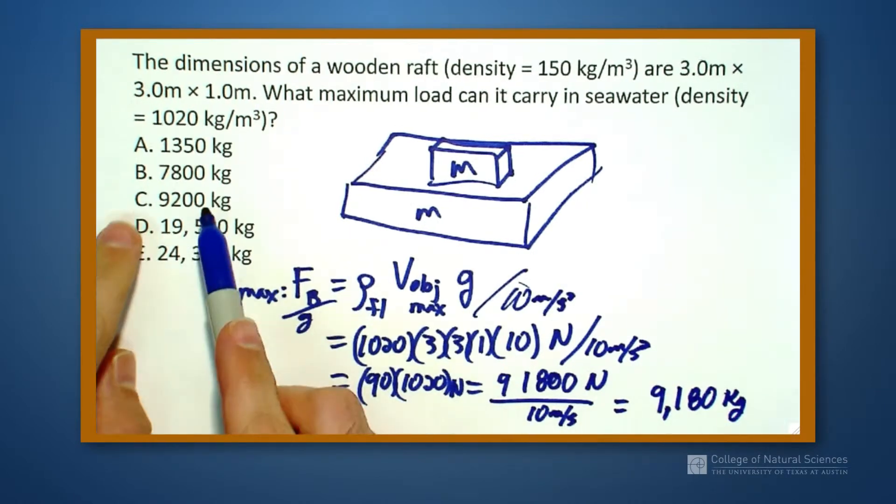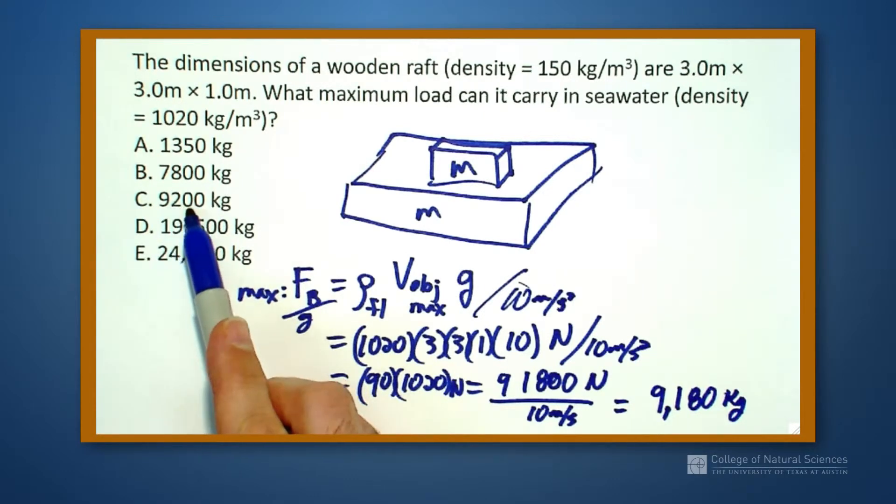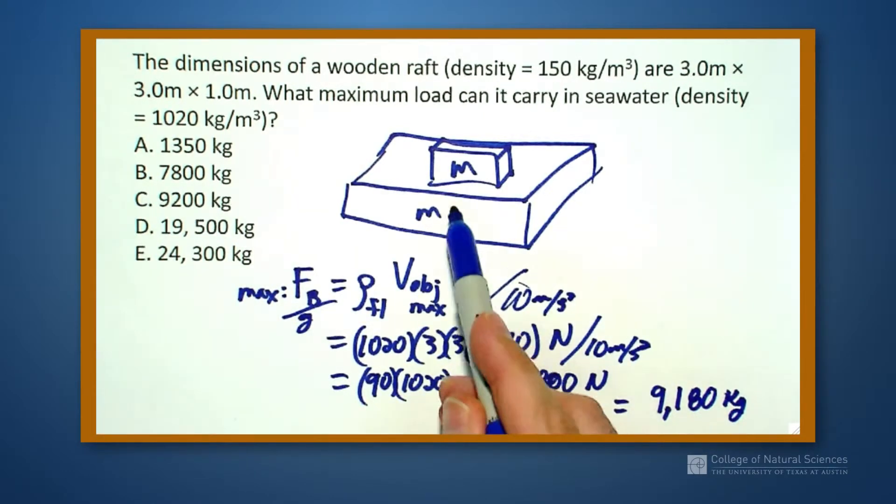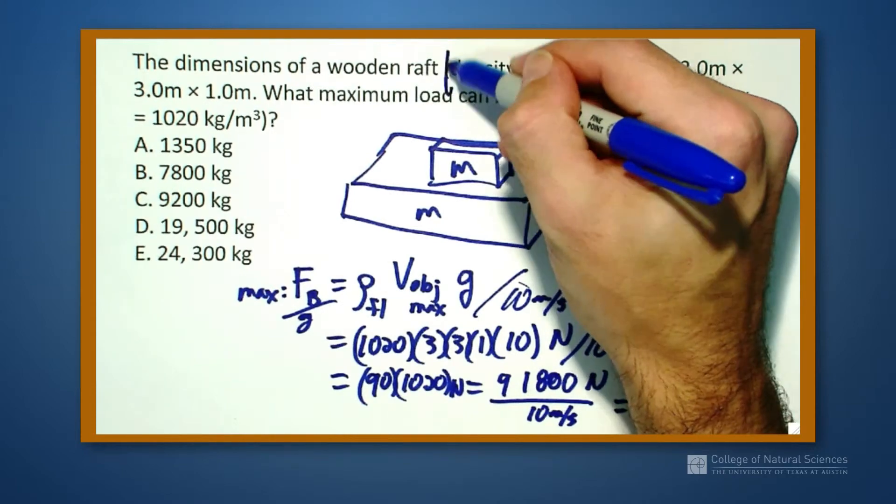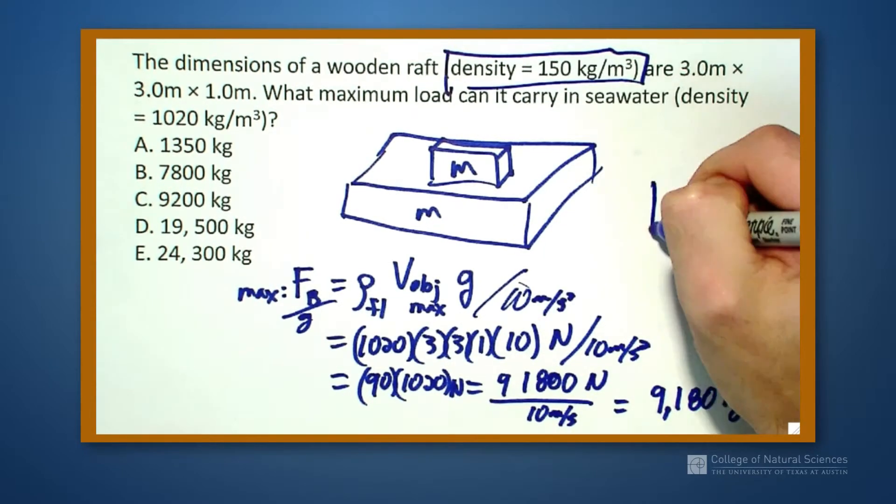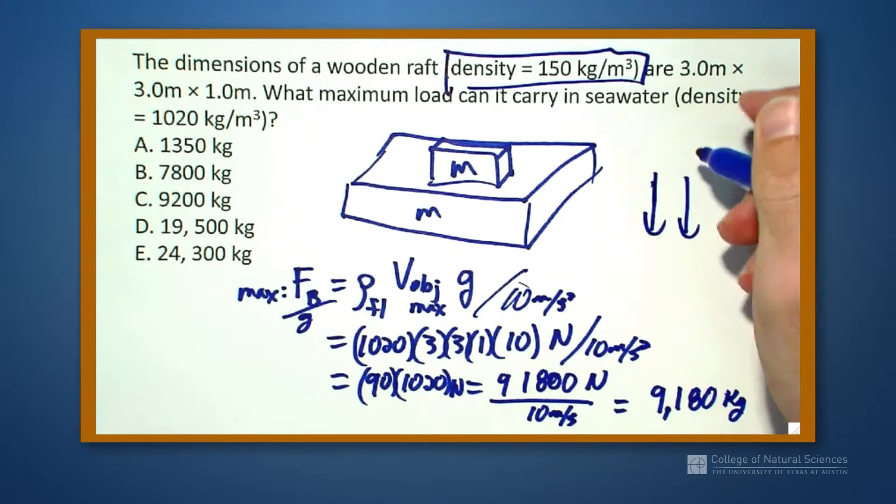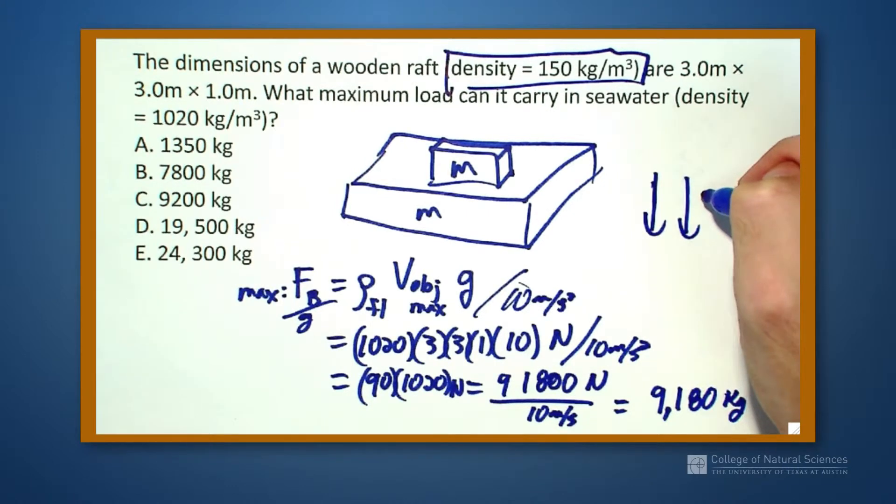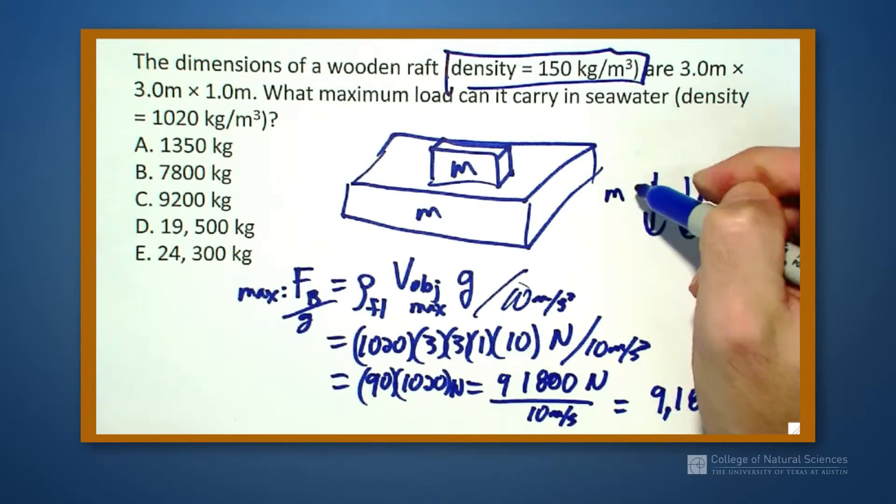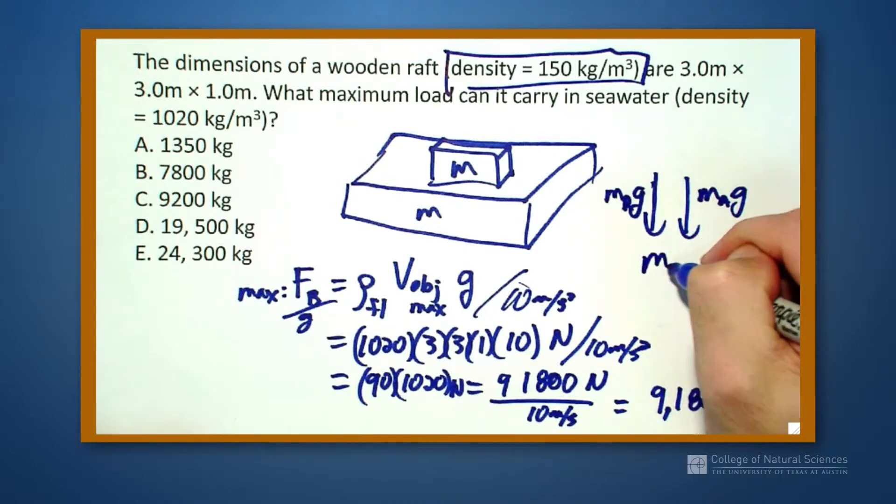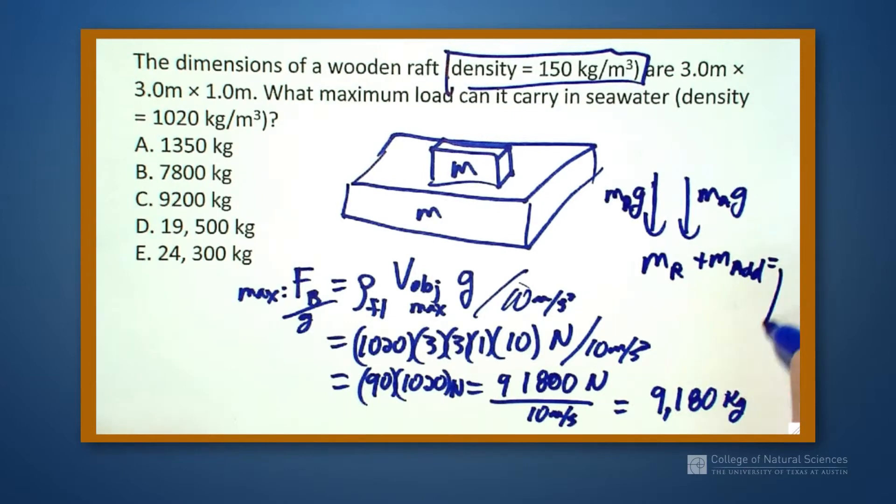Well, that looks like this number right here, the 9,200. However, it has to support itself. We haven't taken into account that there's two downward forces on it. There's the downward force due to the added mass and there's the downward force due to the raft itself. And m_raft plus m_added have to be equal or less than that value.